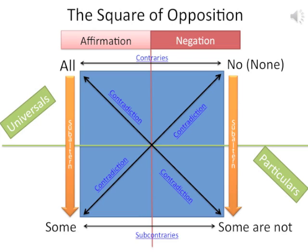Subalternation only works in one direction. And that's what you have for the square of opposition — all of the quantifiers available in categorical logic, stated in these terms and the way that they oppose each other, helps us navigate our way through an actual argument.